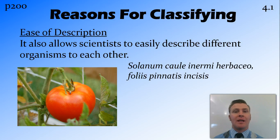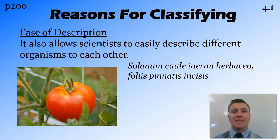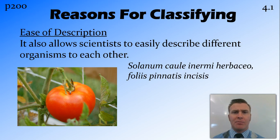Another reason that we classify things is to make it easier to describe organisms to scientists in another place who might not necessarily have the organism in front of them. Rather than having to describe all the properties of that organism, we can say that it's in a particular taxa and therefore has all the properties of that taxa. For example, if we're talking about birds and I say it's a blackbird, you know that it's a bird, so therefore it's going to have a beak and wings and lay eggs. I don't have to say all those things — just by saying bird, all those characteristics are implied.